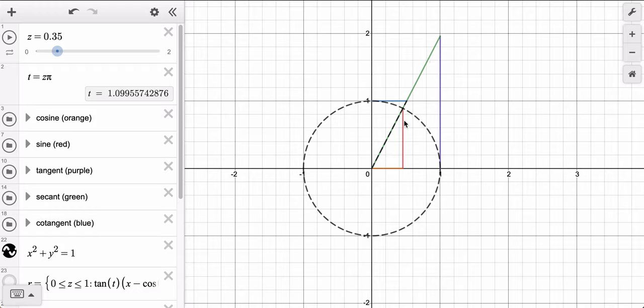but the ratio of sine to cosine is getting larger. Sine, the y value, is getting bigger and bigger and bigger as we increase theta, in this case z. And cosine is getting smaller and smaller and smaller.